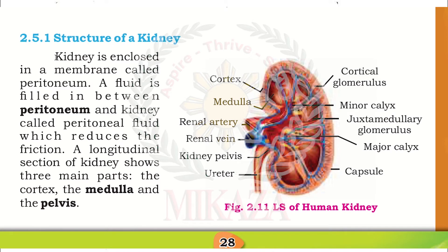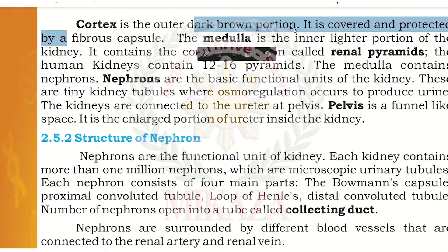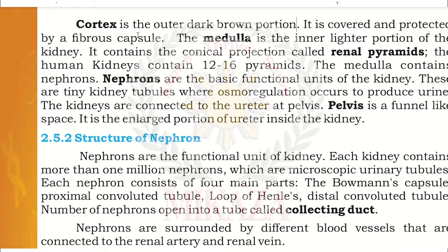The kidney is enclosed in a membrane called the peritoneum. A fluid between the peritoneum layers reduces friction. A longitudinal section of the kidney shows three main parts: the cortex, the medulla, and the pelvis. The cortex is the outer brown portion, covered and protected by a fibrous capsule. The medulla is the inner, lighter-colored portion.